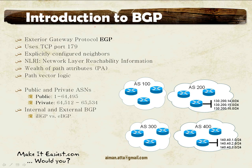BGP is considered an exterior gateway protocol, EGP for short. This is a class of routing protocols that can be used between autonomous systems. For example, if we have autonomous system 100 and another autonomous system 200 and we need to exchange routing updates between them, most probably we're going to use BGP. It is actually the routing protocol of the internet today. An autonomous system is just like an ISP.